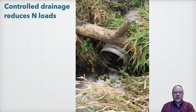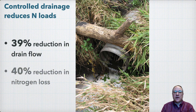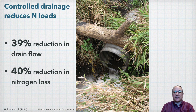A synthesis study of controlled drainage sites from across the Midwest and North Carolina, as part of the Transforming Drainage Project, found that controlled drainage reduced drain flow by 39% on average and nitrogen loss by 40%. Controlled drainage may also help encourage some denitrification, but studies have found no significant differences in nitrate concentrations from controlled drainage. Controlled drainage may also help reduce dissolved reactive phosphorus losses through drainage, but more research is needed on this.